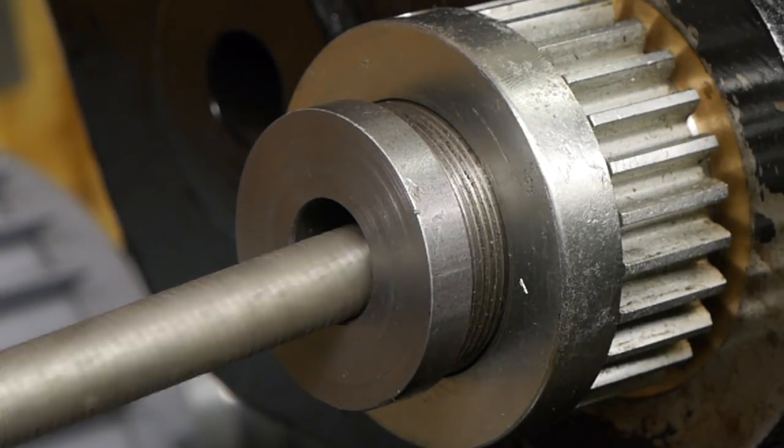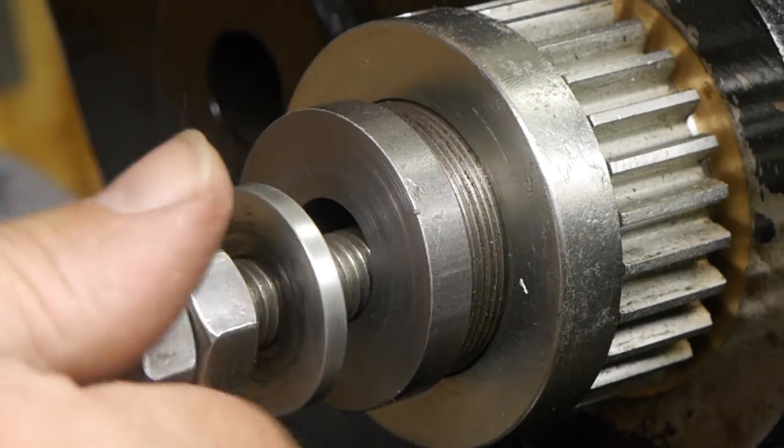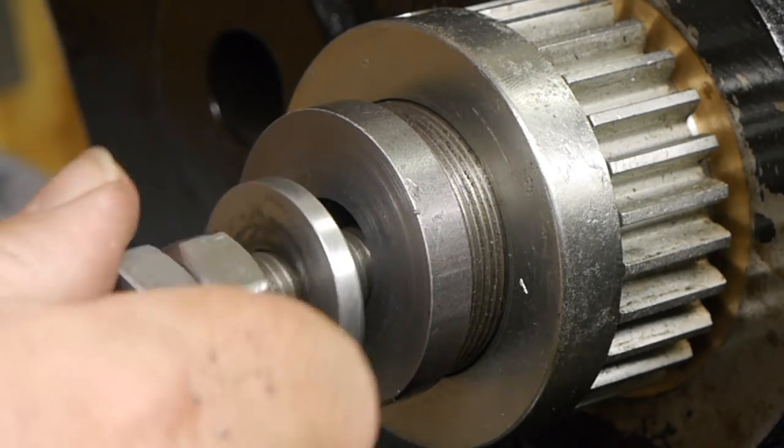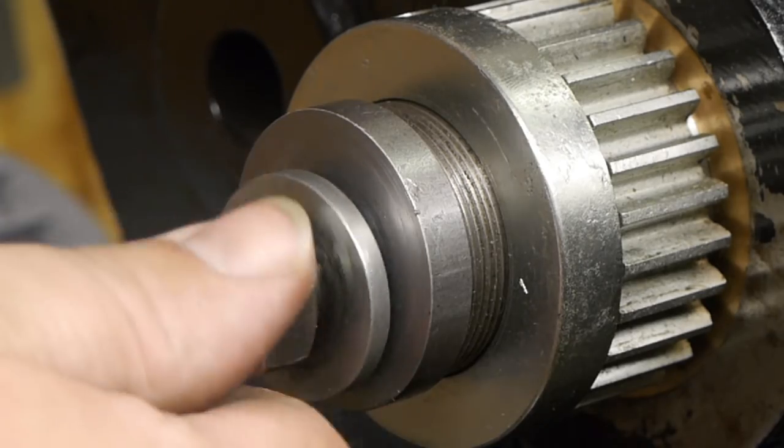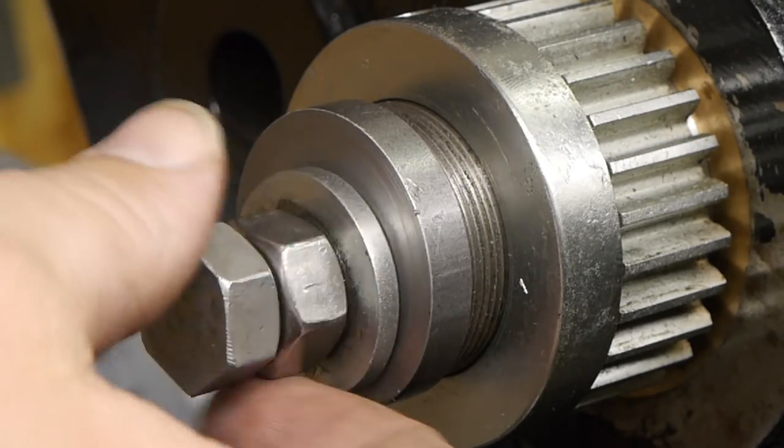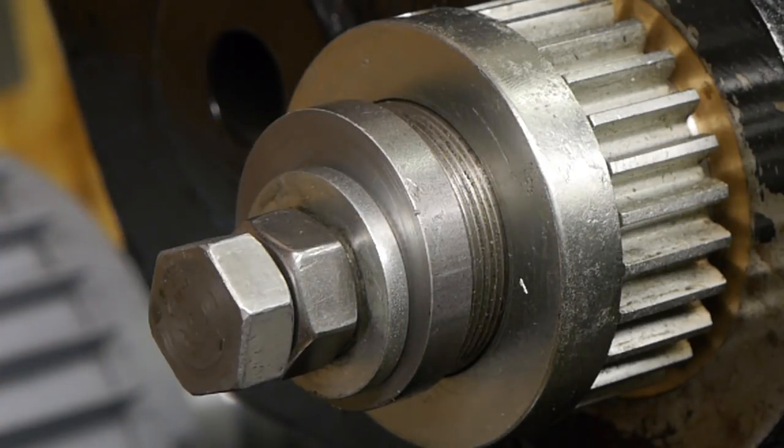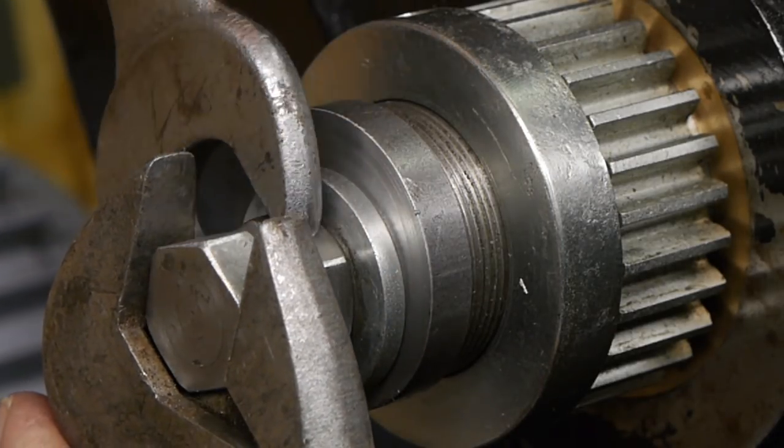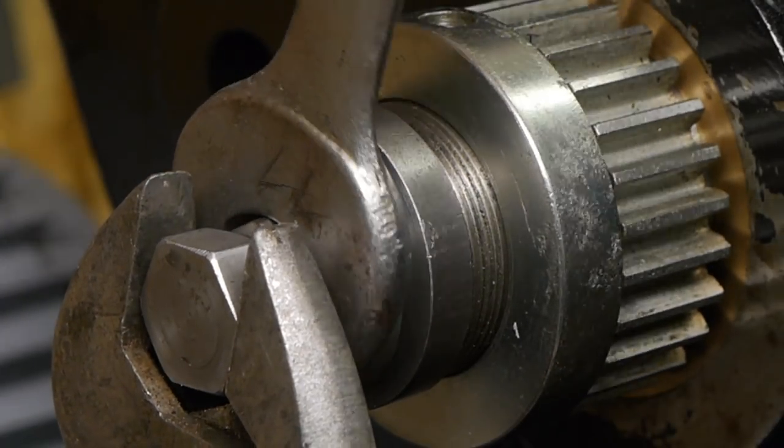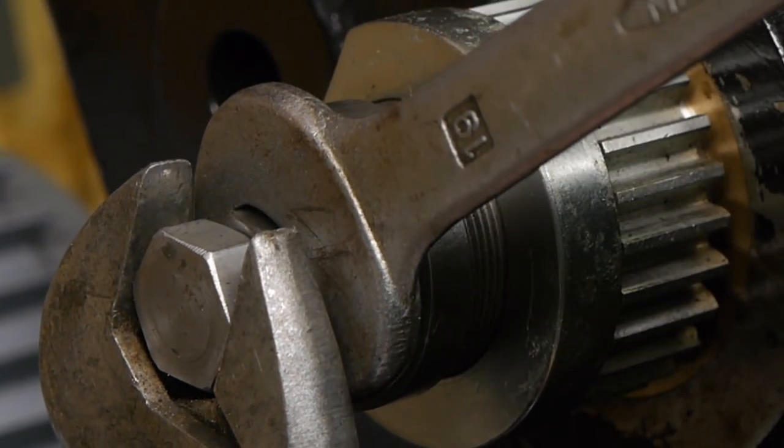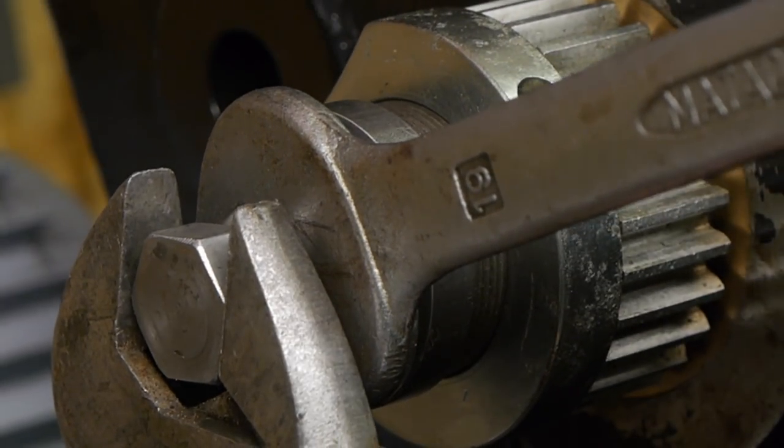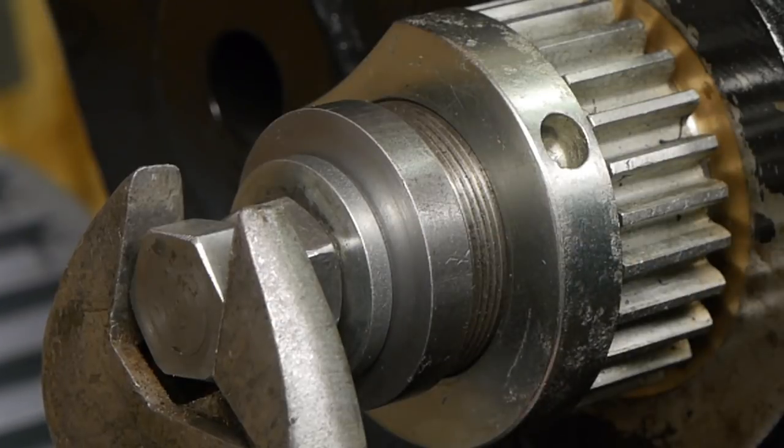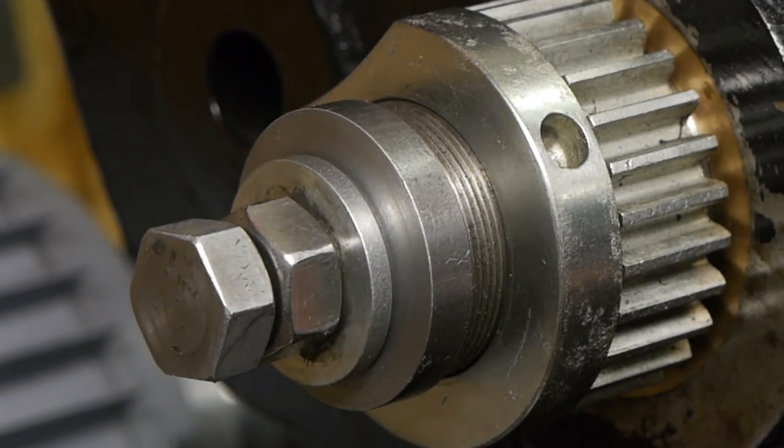One of these days I'm going to make a better drawbar because this one is terrible when you need to get it loose again. I'm thinking something with a thrust bearing will work better, although a spindle stop will also help. But that's on my wish list since forever.